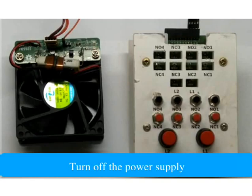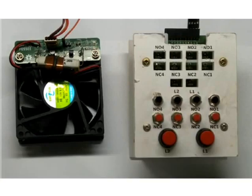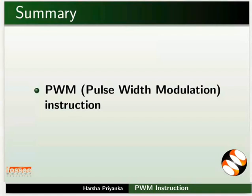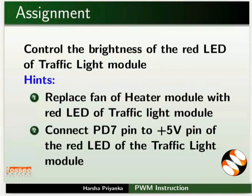Turn off the power supply. This brings us to the end of this tutorial. In this tutorial, we learnt about the working of PWM instruction. As an assignment, control the brightness of the red LED of the traffic light module — replace the fan of the heater module with the red LED of the traffic light module, and connect PD7 pin to the plus 5V pin of the red LED of the traffic light module.